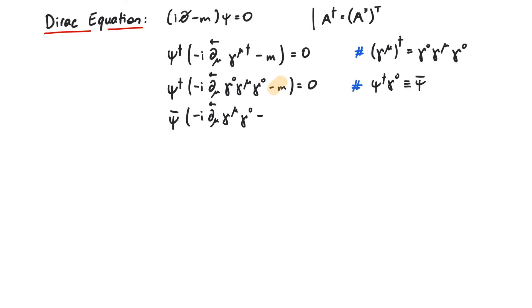But wait, there is no gamma zero to pull out next to the mass term. So we put the inverse of gamma zero there. To get rid of it, we multiply the whole equation with gamma zero from the left. This cancels the inverse of gamma zero next to m and produces a gamma zero, gamma zero term.